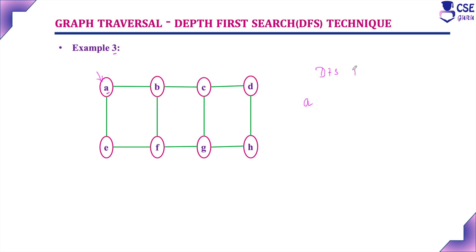The DFS traversal output begins by visiting vertex A. Next, we need to consider the adjacent vertices to the currently visited vertex. Currently visited vertex is A, and its adjacent vertices are B and E. Among these two vertices, we break the tie and visit vertex B first, since B comes first in alphabetical order.